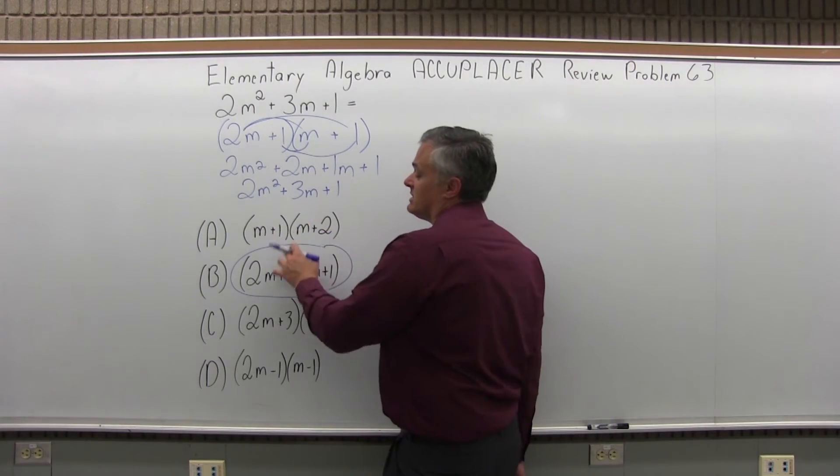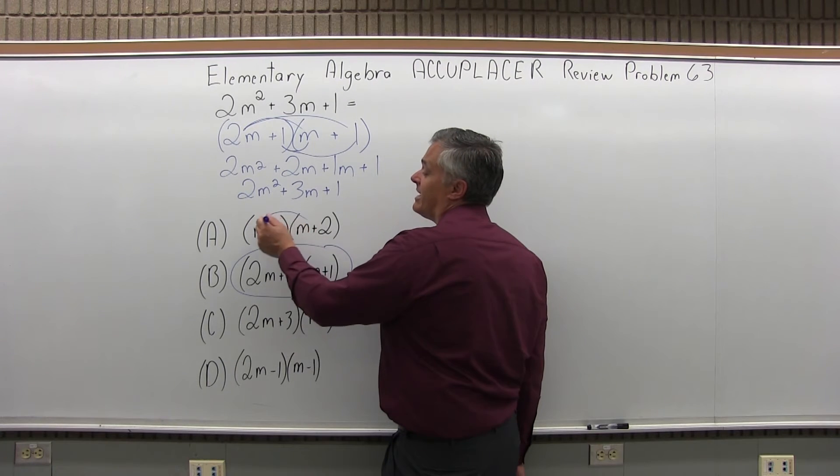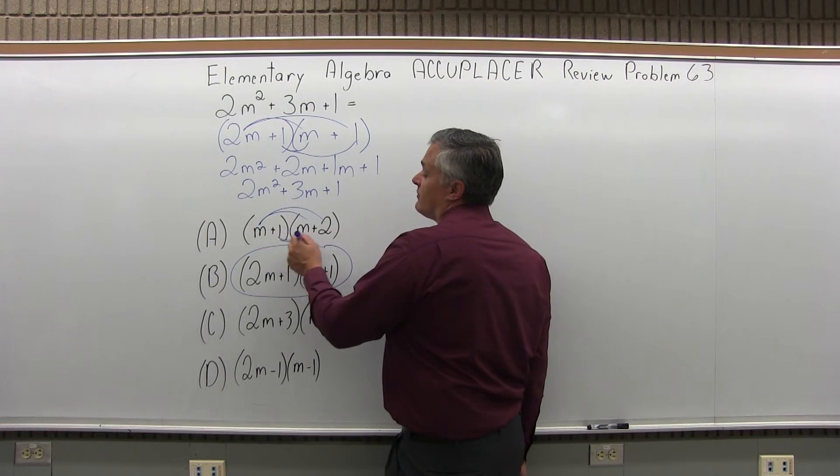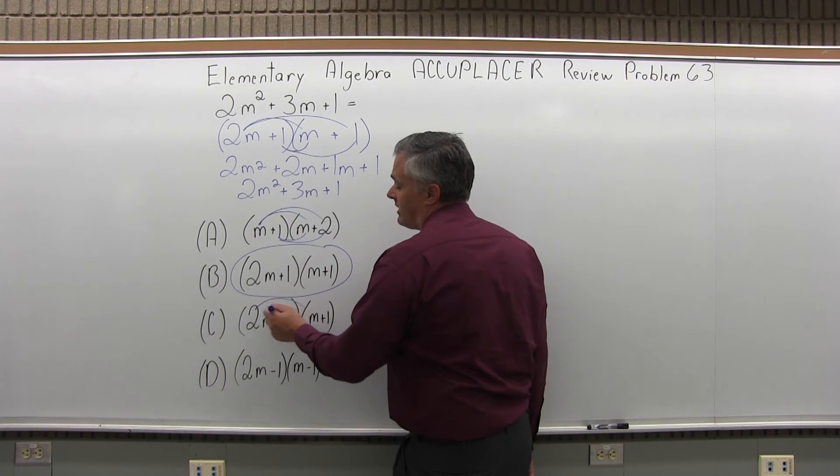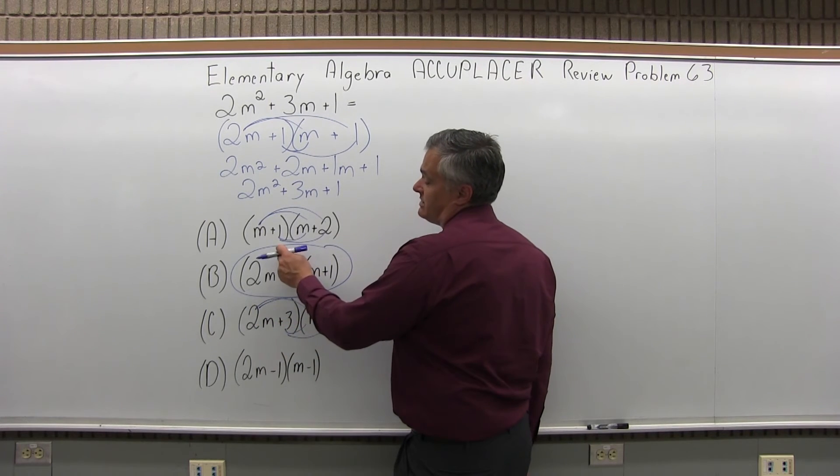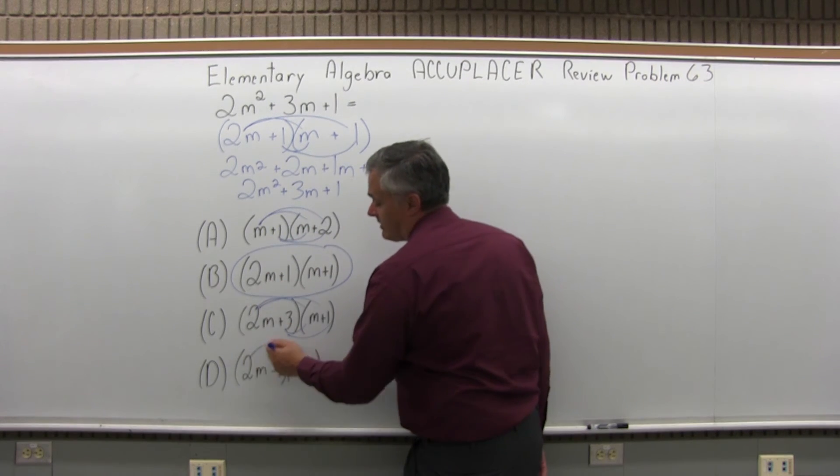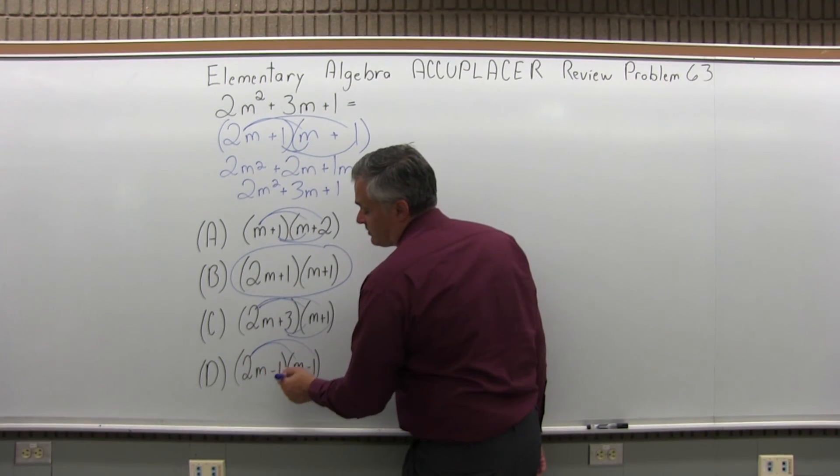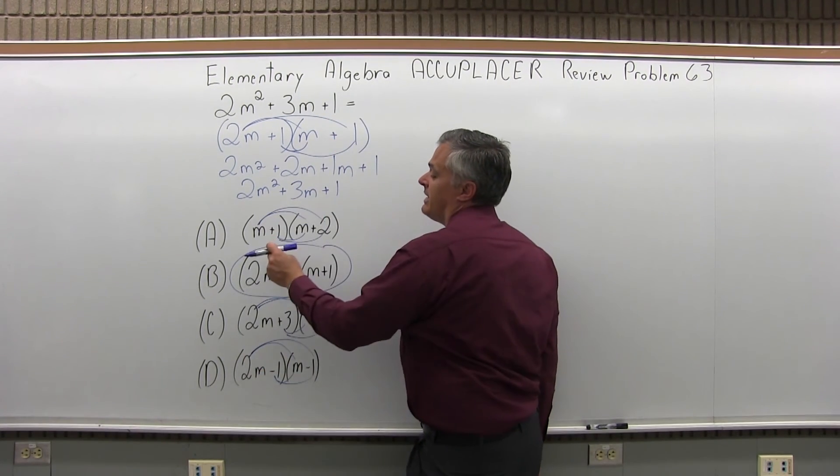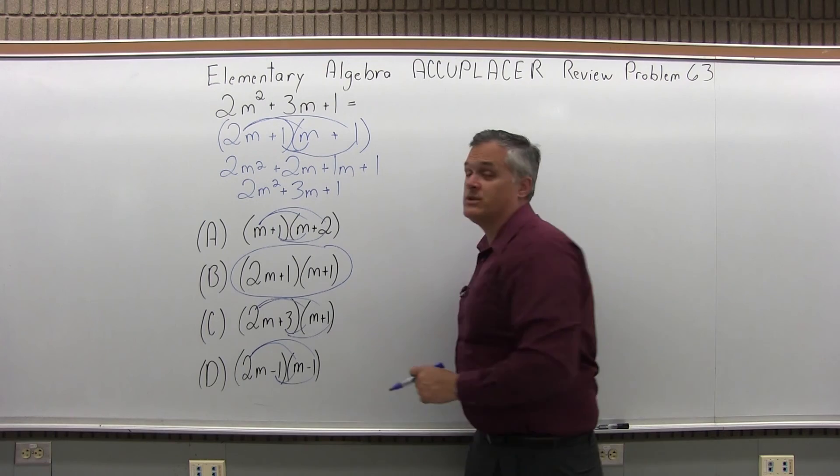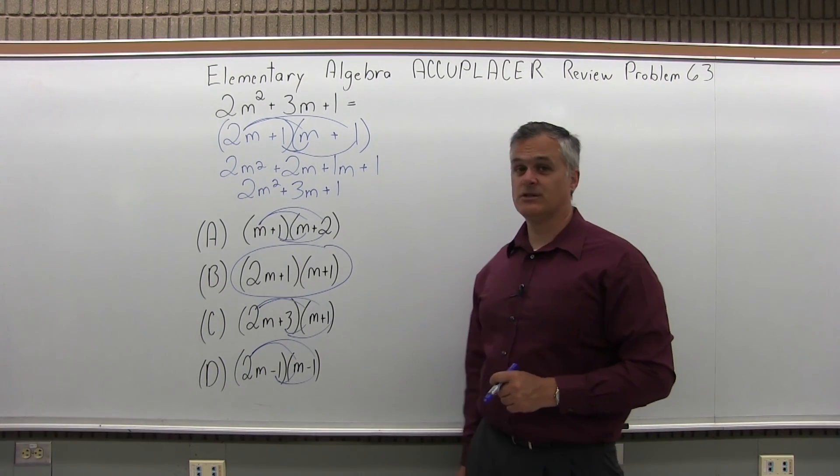As I've mentioned with some of these others, where this is an untimed test, you could just take a few minutes and multiply out each one and keep going. You'd hit it pretty quick. Keep going until you see which one gives you back the original problem. Either way you do it, you would see that it's option B. But factoring it is quicker and easier.